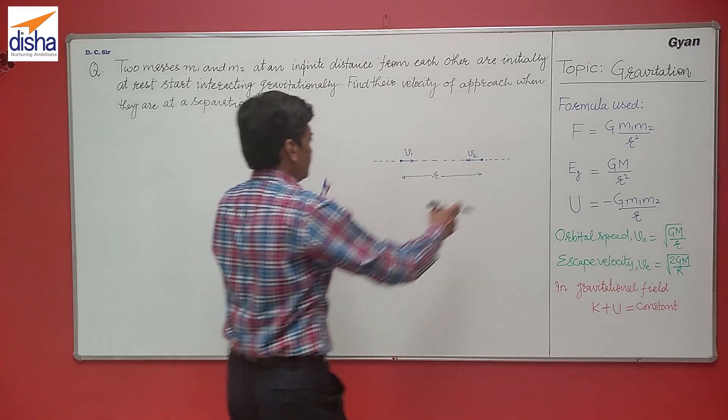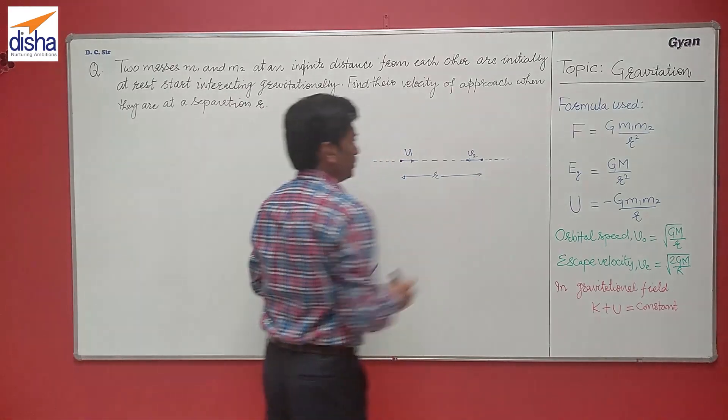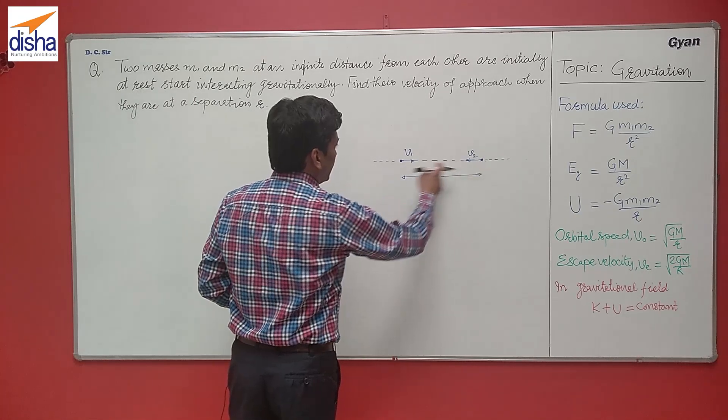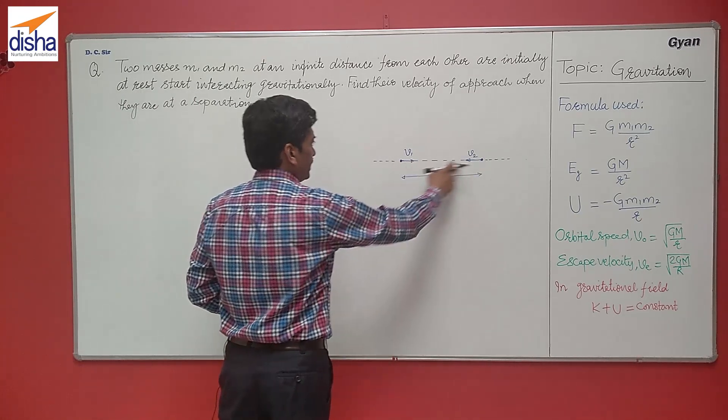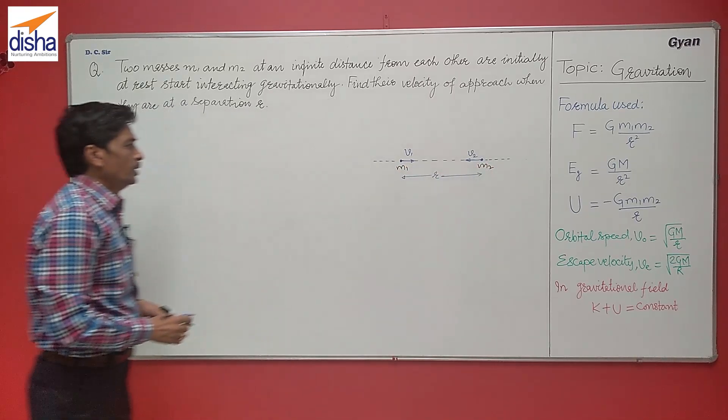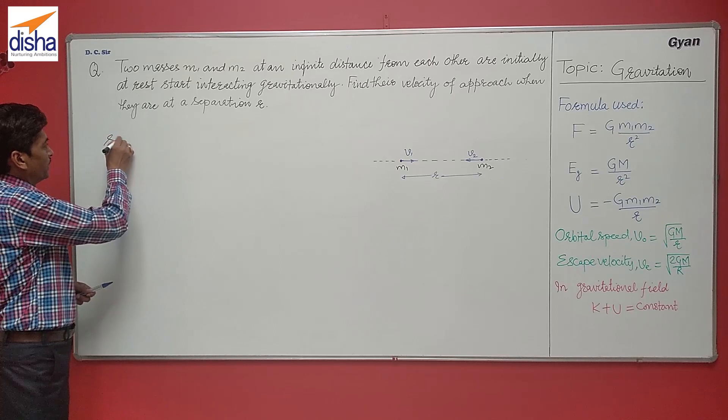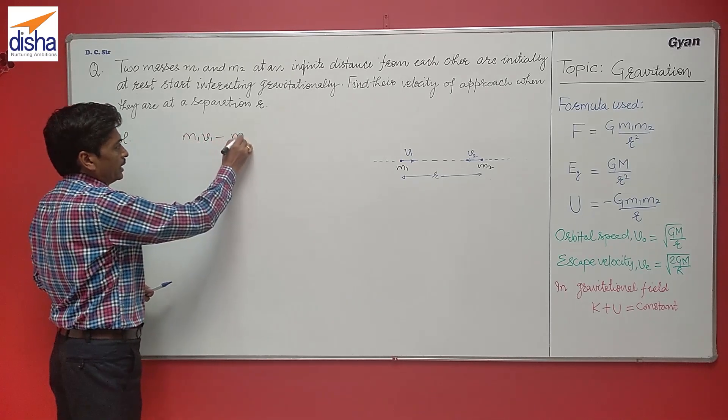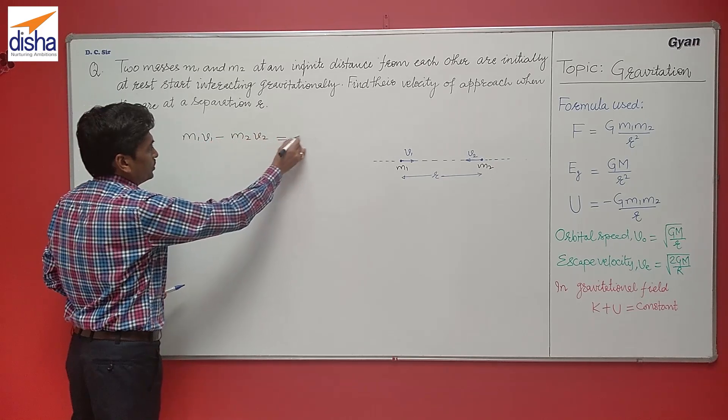Initially, the momentum is zero, so at any instant it also must be zero. Let their velocities be V1 and V2. Their masses are M1 and M2. So by conservation of momentum, we can write M1V1 minus M2V2 is equal to zero.